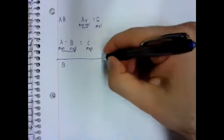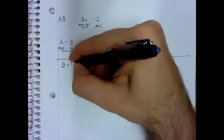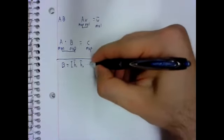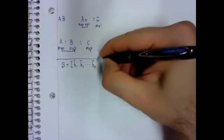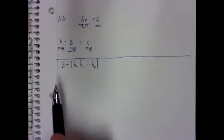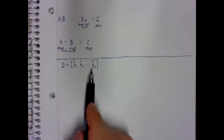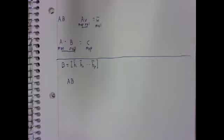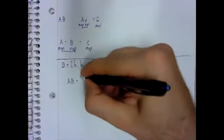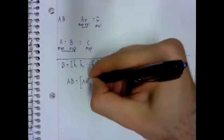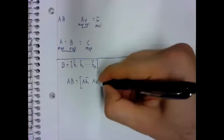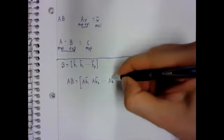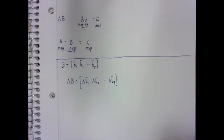Instead, we define a matrix multiplication in terms of a vector multiplication. So as we often do, let's think of a matrix as a bunch of vectors sitting next to each other. Then we define this product as A times the first vector, A times the second vector, and so on.